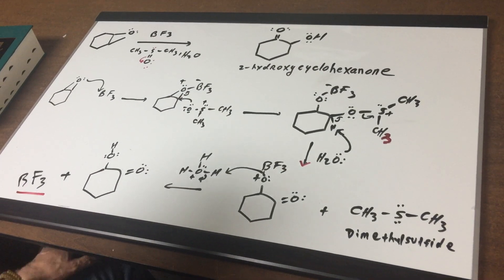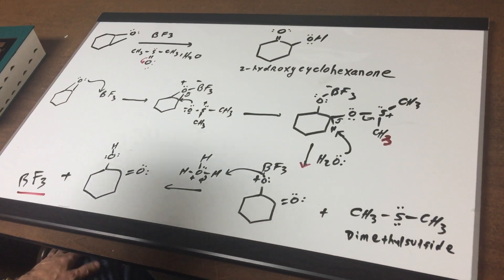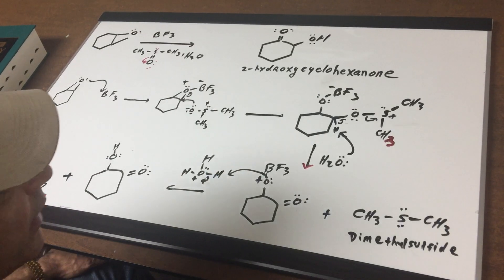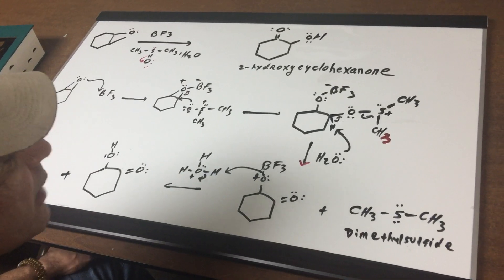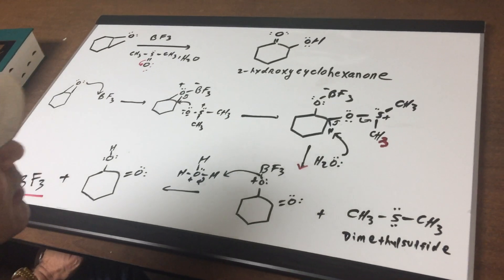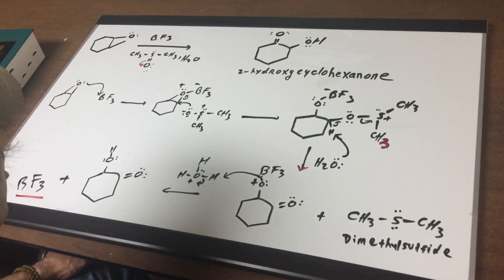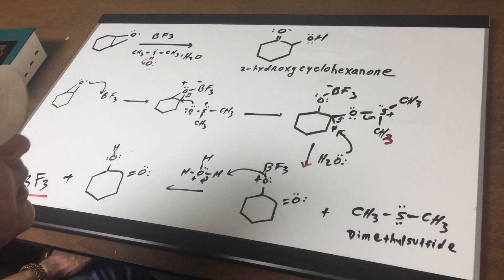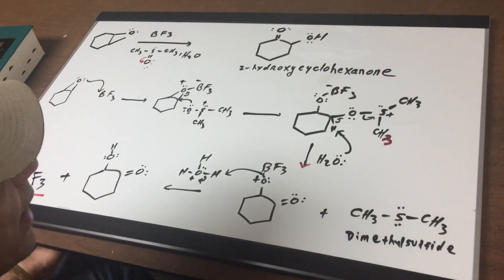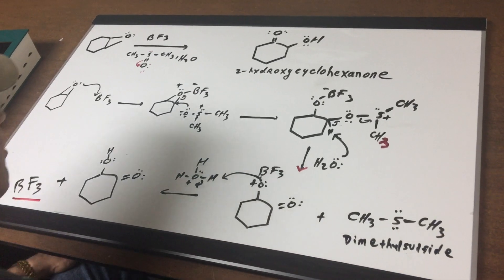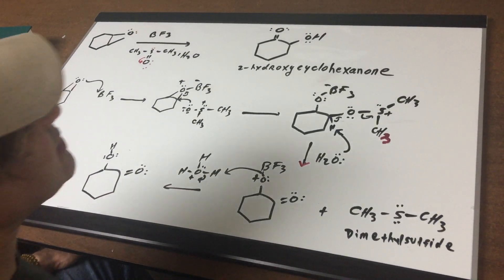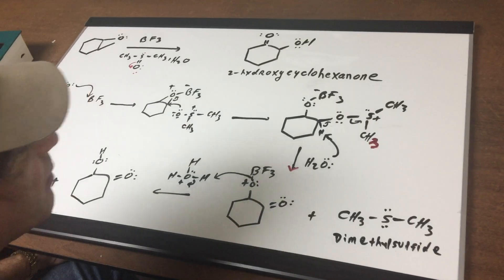And we get the product 2-hydroxycyclohexanone. I hope this gives you an understanding of the way we can move arrows and show what's called a mechanism. For the DAT exam, there are questions where you're going to be required to understand what an arrow movement does. I hope this helps, and I'll see you in study group on Facebook.